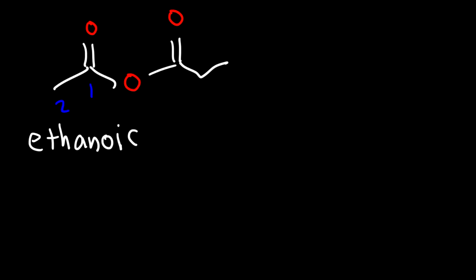And then on the right side, there's a total of three carbons, which will be associated with propanoic. And it's already in alphabetical order. So we could say it's ethanoic, propanoic, anhydride.